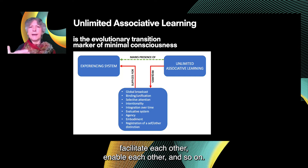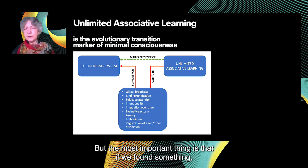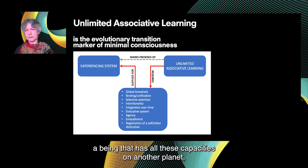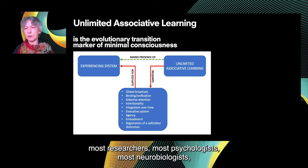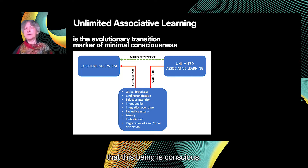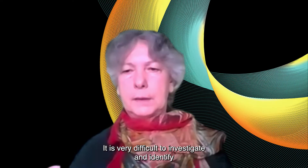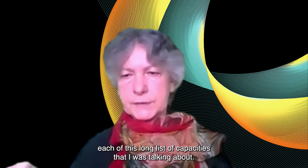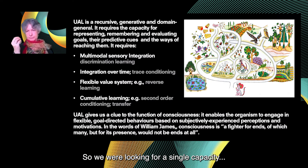All these characteristics are related to each other — they comply with, facilitate, and enable each other, and they form a system. Most importantly, if we found a being on another planet that has all these capacities, most researchers, psychologists, neurobiologists, and cognitive psychologists would say we have to take very seriously the possibility that this being is conscious and treat it with respect. However, it is very difficult to investigate and identify each capacity on this long list, so we were looking for a single capacity that requires the whole list to be in place.